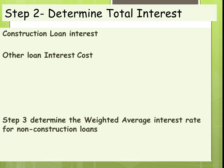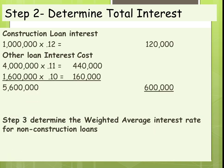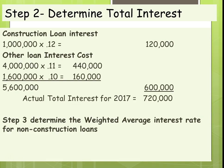Next, we figure out how much interest we have on our construction loan by itself — that was $1 million, so the interest for the year would be $120,000. Then we look at additional interest incurred: the $4 million at 11% and the $1.6 million at 10%, giving us total actual interest for the year of $720,000.